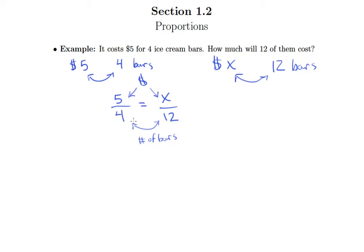Now there are multiple ways to set up proportions. Another way that you could have done this is you could have said that comparing five dollars to X dollars is going to be the same as comparing four bars to 12 bars.